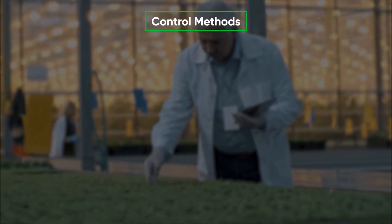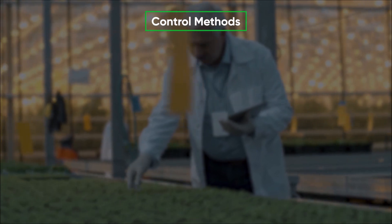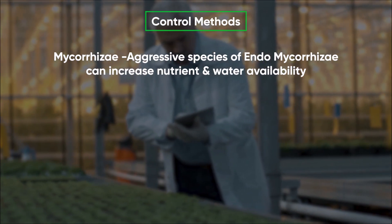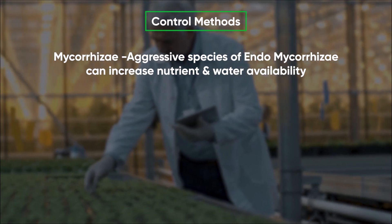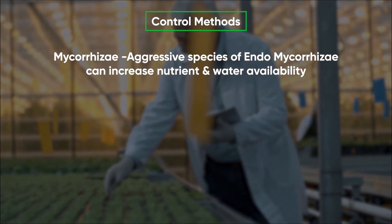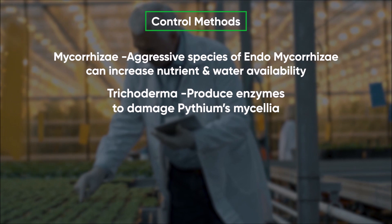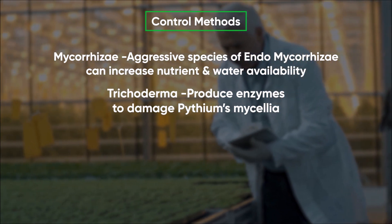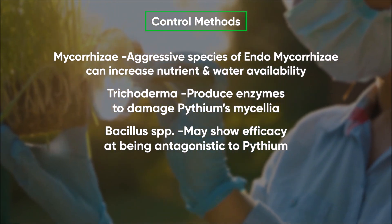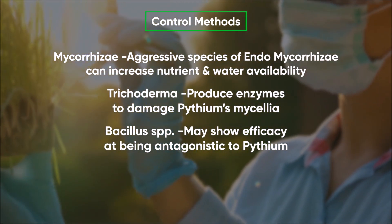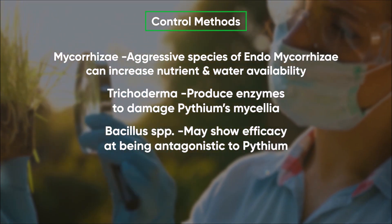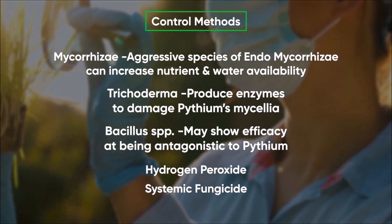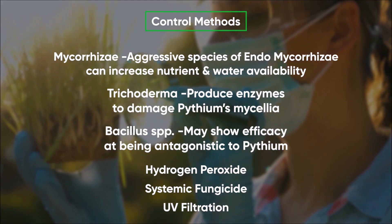Control methods — beneficials and treatment. Mycorrhiza: aggressive species of endomycorrhiza can increase nutrient and water availability. Trichodermine: produces enzymes to damage pythium's mycelia. Bacillus SPP.: may show efficacy at being antagonistic to pythium. Additional treatments include hydrogen peroxide, systemic fungicide, and UV filtration.